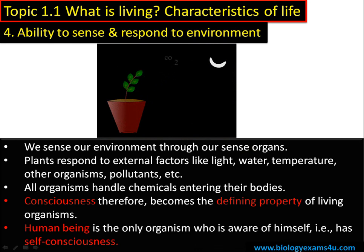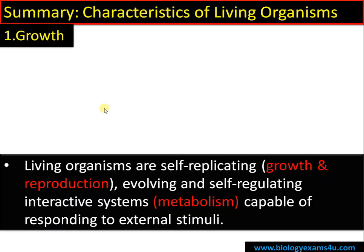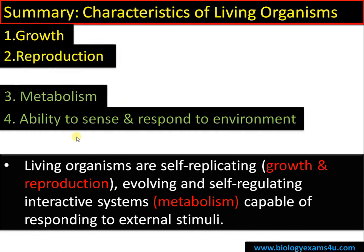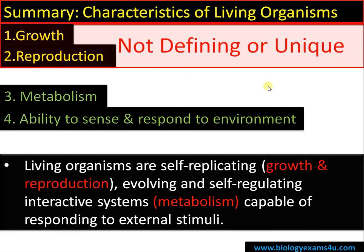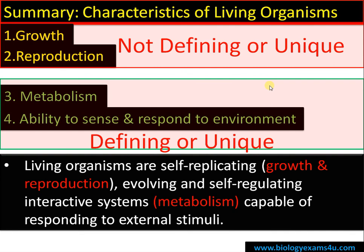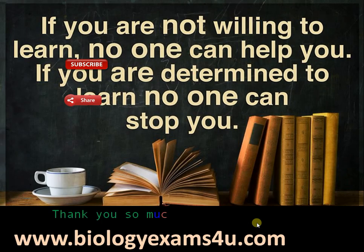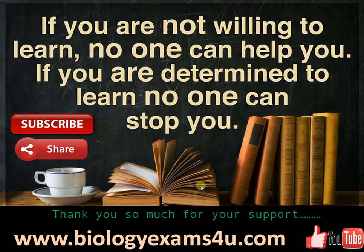In summary: the first two features — growth and reproduction — are not defining or unique characteristics of living organisms, whereas the third and fourth — metabolism and ability to respond to environment — are unique characteristics without exception, not seen in non-living things. In short, living organisms are self-replicating, evolving, and self-regulating interactive systems capable of responding to external stimuli. Hope things are clear. You are with biology exams4u.com — send your suggestions or comments, thank you so much for your support.